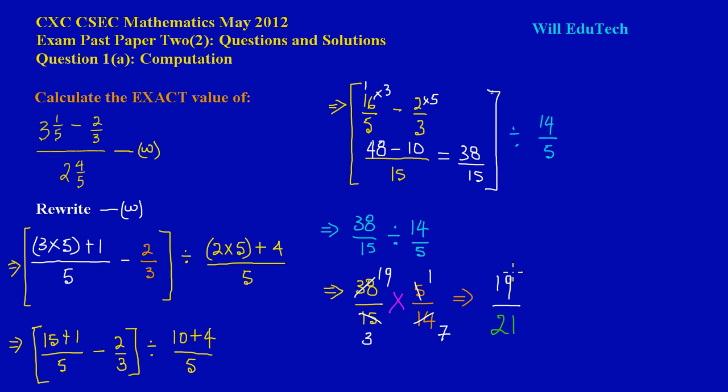Okay, so here is my answer, 19 upon 21. And it's pretty much that easy. See you in the next video, we will be looking at part B. Bye.